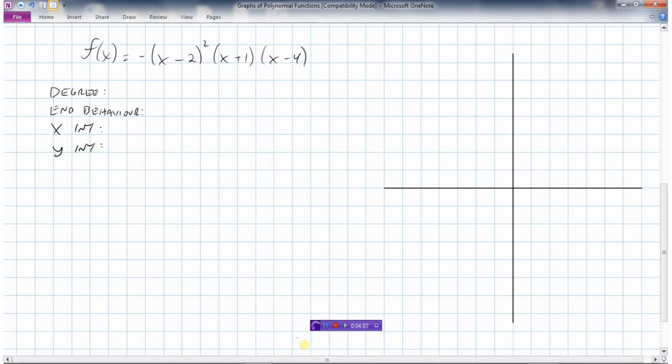So looking at the degree of the function, well this is an x squared here but then it's going to be multiplied by an x which would make it an x cubed, and it'll be multiplied by another x which would make it a degree 4. So if we were to multiply all this out, because these are all times, you'd have x times x times x squared which makes this a degree 4.